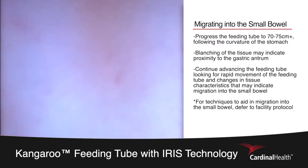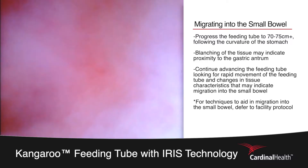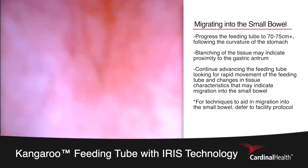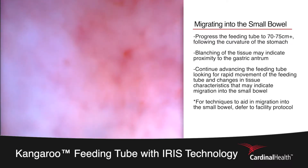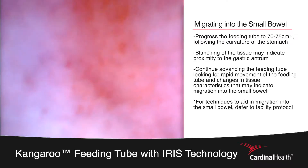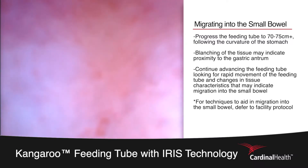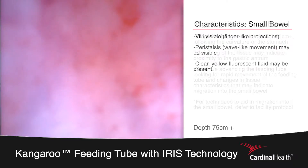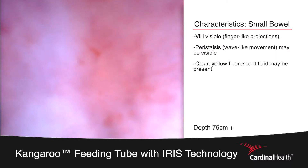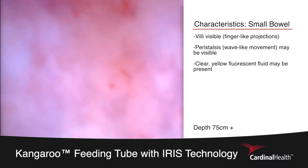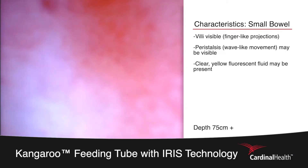In this patient, we're able to visualize the pylorus open and close as the tube progresses through it. After visualizing rapid movement around the 70-75 centimeter mark, we're looking for changes in the tissue to determine that we've progressed into the small bowel. The tissue of the small bowel is covered with finger-like projections called villi that will move around the feeding tube in a wave-like fashion.